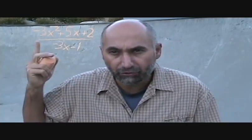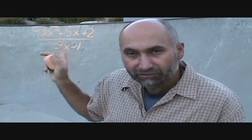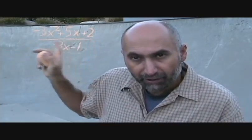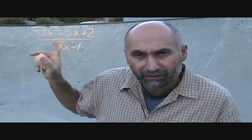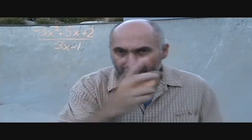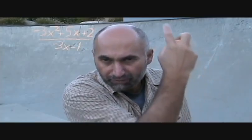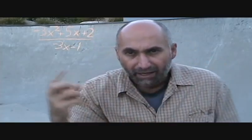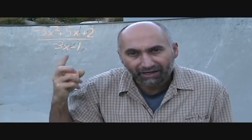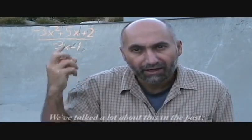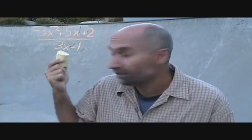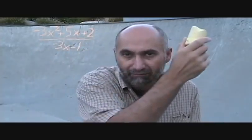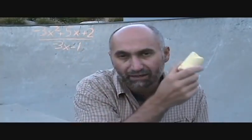You take the coefficients in front of the X terms and the constant — you forget about the variables — and you lay them all down. You do a sort of an upside-down division symbol, and you set the divisor expression equal to zero and solve, so X equals negative 1 over 3. Then you set up your synthetic division statement.